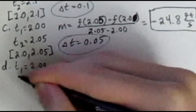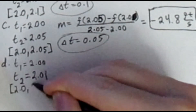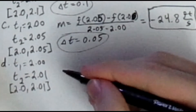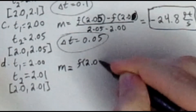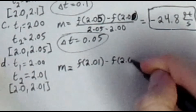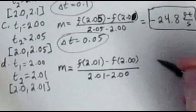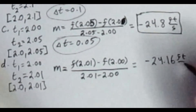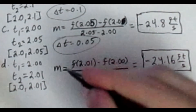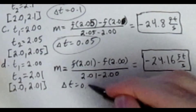For part D, t1 is 2.00 and t2 is 2.01, the closed interval [2.0, 2.01]. Our average rate of change is f(2.01) minus f(2.00) divided by 2.01 minus 2.00, which equals negative 24.16 feet per second. Delta t is 0.01.